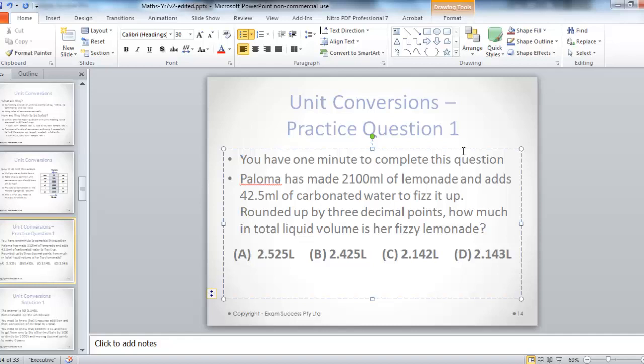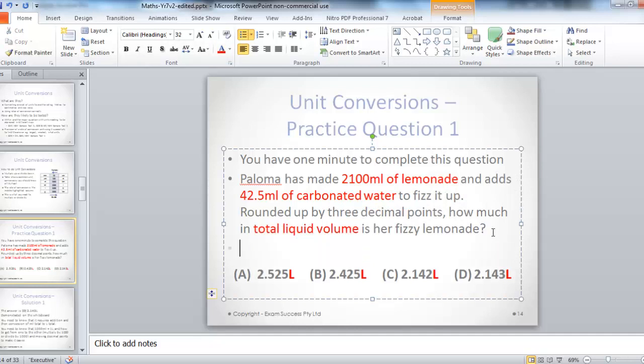So let's move on to answering this question. So first things first, I always find out the facts. The facts are that 2,100 millilitres of lemonade adding the same millilitres of carbonated water to fizz it up. And you've got your answers in litres. So what do you need to do? We need to first address each individual part of the question. Let's do that. Round it up by three decimal points. How much in total liquid volume is her fizzy lemonade? Let's find the total liquid volume in millilitres first. So you've got 200 millilitres plus 42.5 millilitres is 2142.5 millilitres, because it's the same unit, so you just add it together. But now how do we change that into litres?